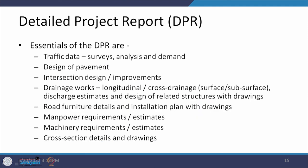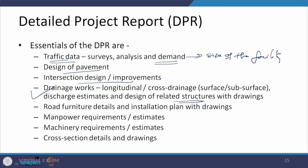The DPR also includes traffic data, which culminates into demand and then the size of the facility; design of pavement; intersection designs and improvements; drainage works in the longitudinal and transverse directions; specific structures — their type, design, and drawings for field construction; road furniture details; installation plans with drawings; estimates of manpower and machinery requirements; and cross-sectional details and drawings that give earthwork computations.